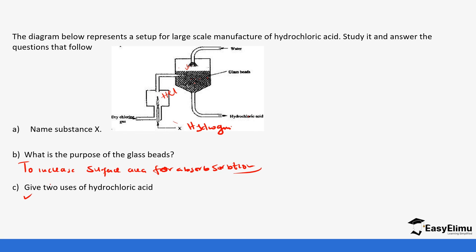Uses of hydrochloric acid include water treatment, making dyes, and making drugs, among the many we mentioned during the session. You can get more practice questions on the website for this topic — it is especially tested in the context of properties of chlorine. That concludes our study of chlorine and its compounds. In the next topic, we will be shifting to the topic of sulfur.